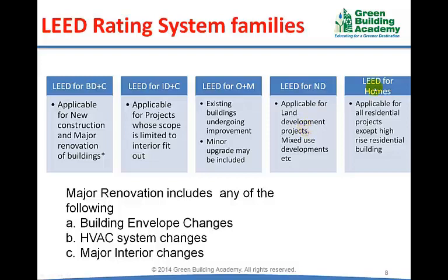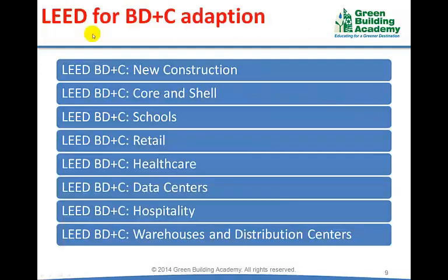LEED for Homes is applicable for residential projects up to 8 habitable storeys. Each family of the rating system is then adapted to meet different project typologies. LEED for Building Design and Construction has 8 adaptations.